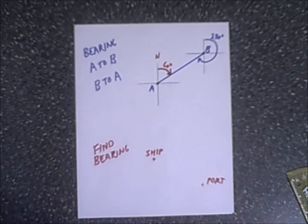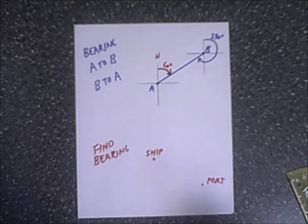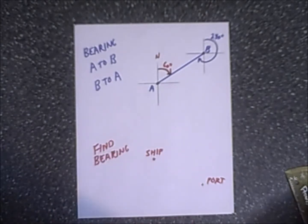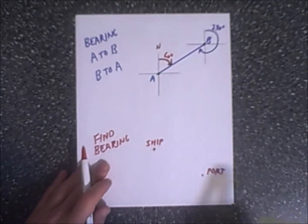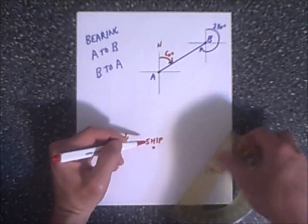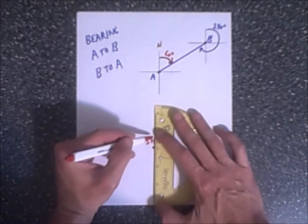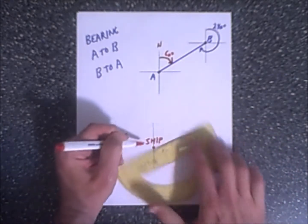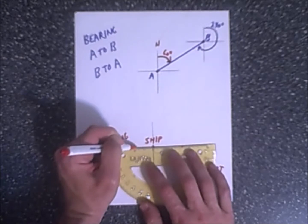Finally, if you're given two objects and want to find the bearing — for example, from a ship to a port — a good idea is to draw grids so you can line up your north-south-east-west axes at each point.